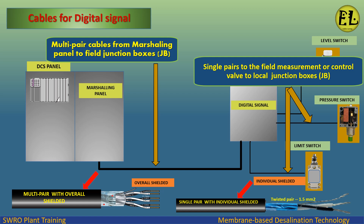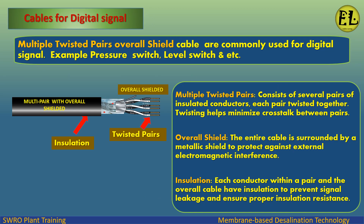For digital signals, multi-pair cables are used from the marshalling panel to field junction boxes, and single pairs are used from the field measurement or control valve to local junction boxes. Multiple twisted pairs overall shield cables are commonly used for digital signals, such as pressure switches and level switches. Multiple twisted pairs consist of several pairs of insulated conductors, each pair twisted together.